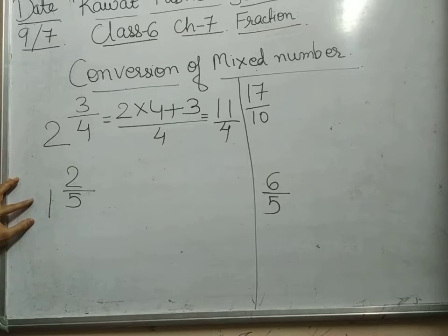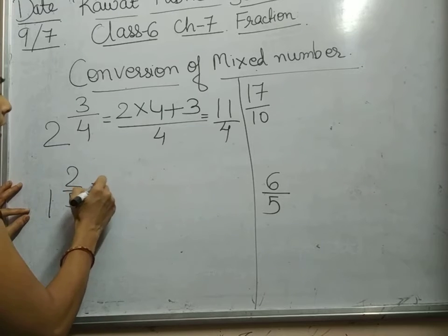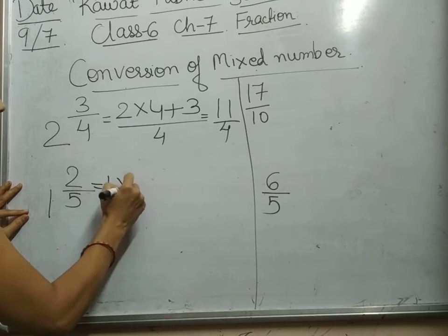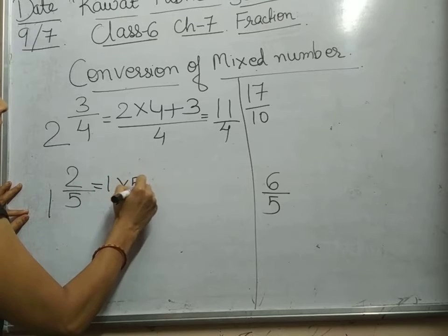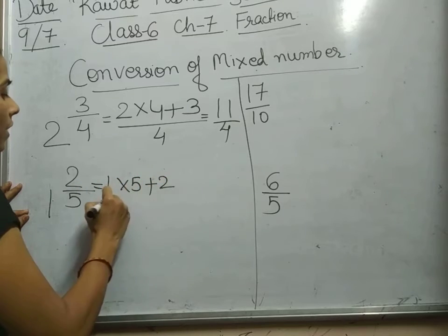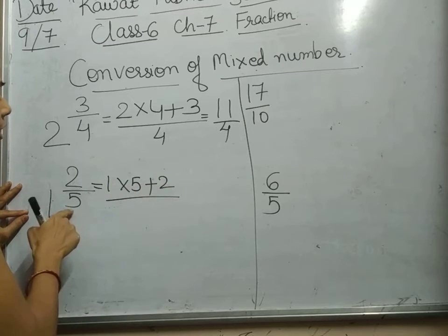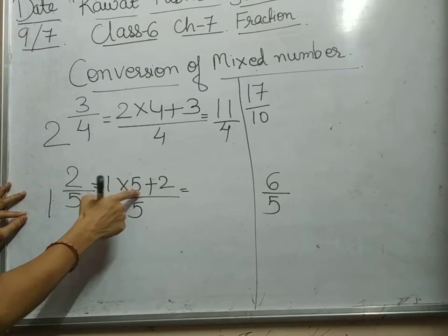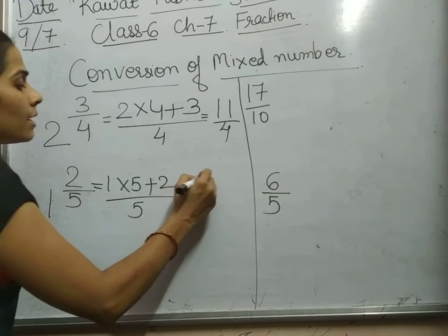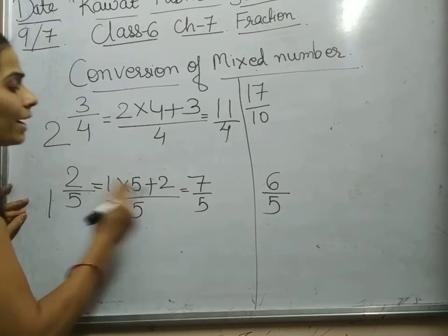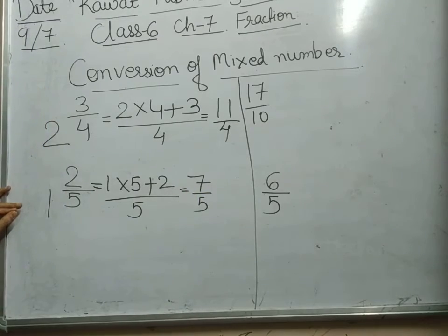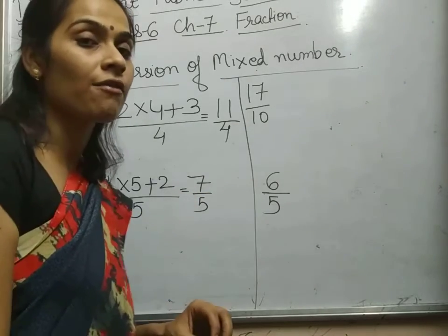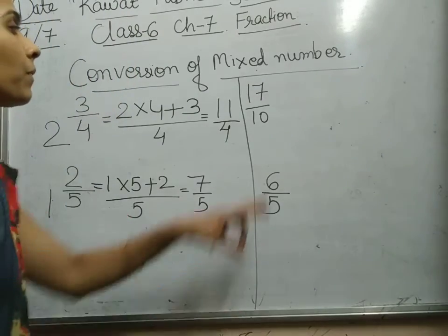For example, there is another question: one and two by five. If you have to convert it into an improper fraction, what we will do? One into five plus two, divided by the denominator which remains the same, equal to five. One five is five plus two is seven — seven by five. Why is it improper fraction? Because if you divide seven by five, you will get a value which is greater than one.